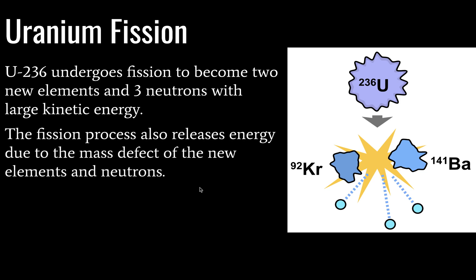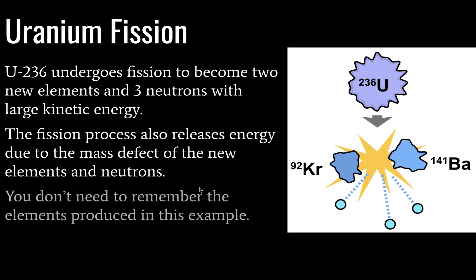And that is due to the mass defect being converted into energy. You don't need to remember these specific elements, you just need to remember the process. So U-235 becomes U-236, and U-236 becomes two new elements, three neutrons in this particular example.